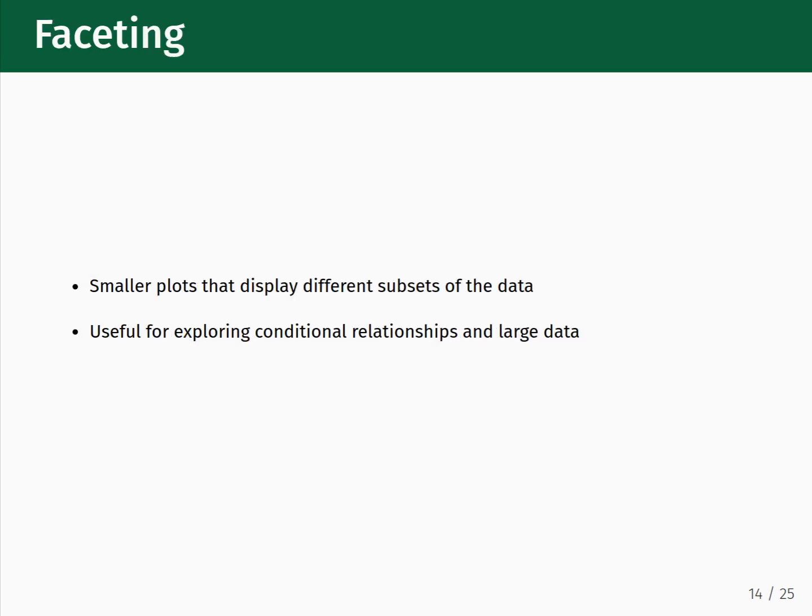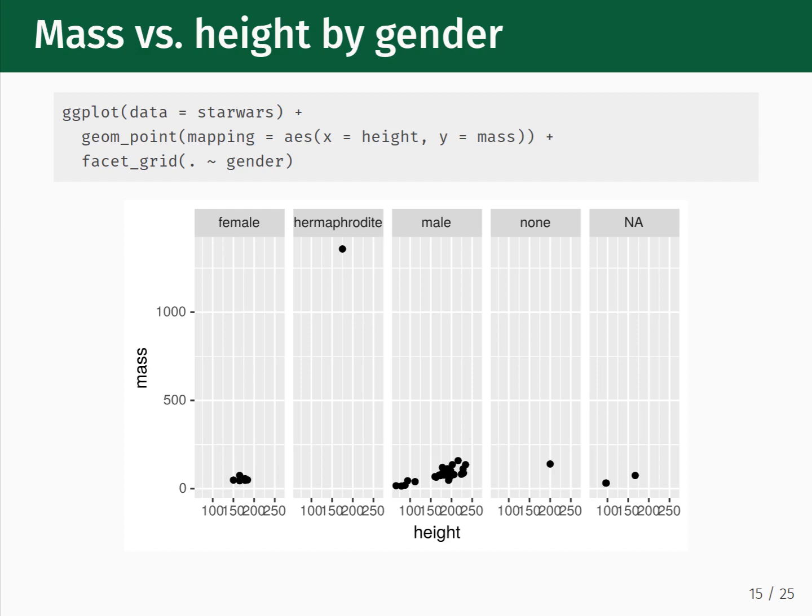Faceting is the other way we can display additional variables in our two-dimensional plots. Facets result in smaller plots that display different subsets of the data, and are useful for exploring conditional relationships and larger datasets. Here we show how the data looks if we facet over gender, as opposed to using the color aesthetic. The gender variable has four labels in it, with blank values showing up as NA. As noted before, this data breakdown doesn't reveal much more, other than the database containing mostly male characters.